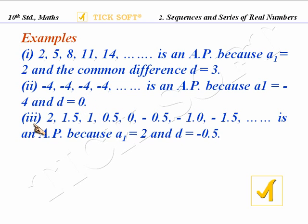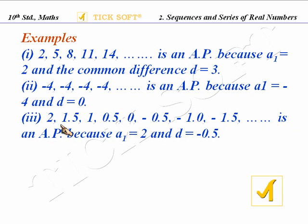Question number 3: the sequence 2, 1.5, 1, 0.5, 0, -0.5, -1, -1.5 is also an AP. The first term is 2, and the common difference is -0.5. That is, the common difference equals the second term minus the first term.